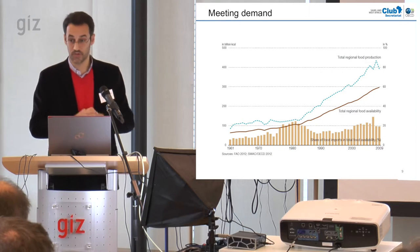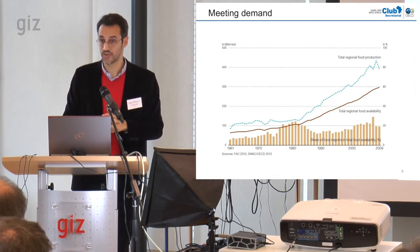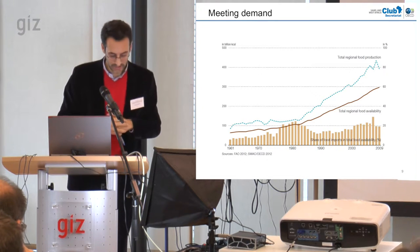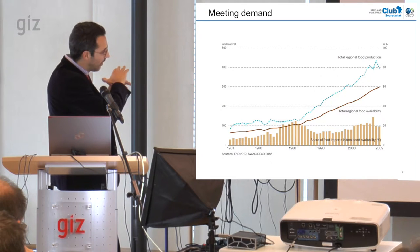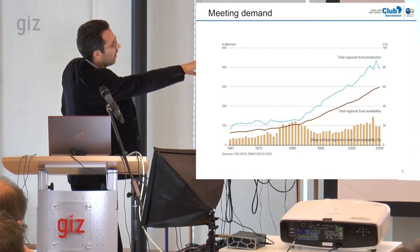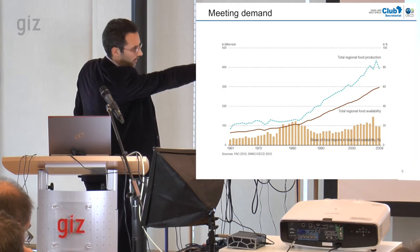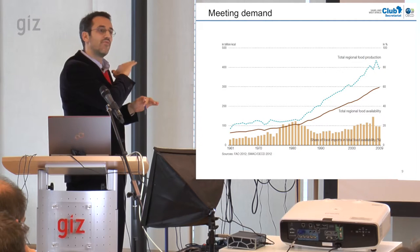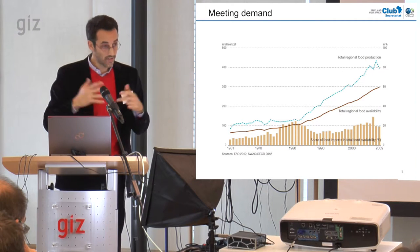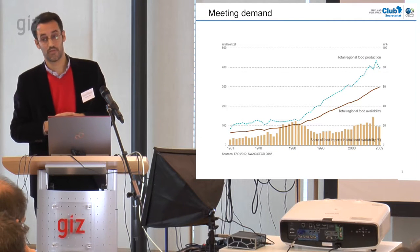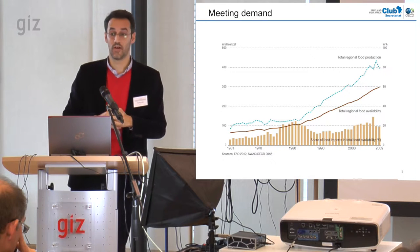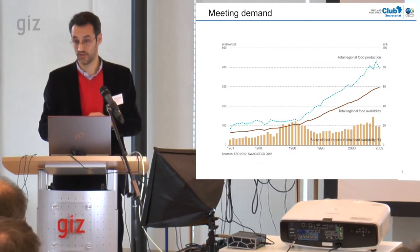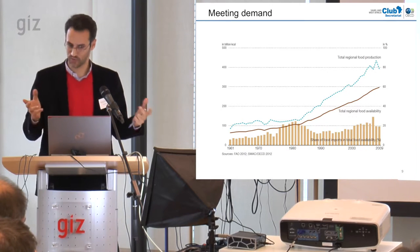Imports have increased substantially in volumes, but in kilocalories — as a share of total regional food supply — that share has remained rather constant. So yes, imports are increasing tremendously in volumes, but as a share of food supply, based on FAO food balance sheet data, they have stayed relatively stable.